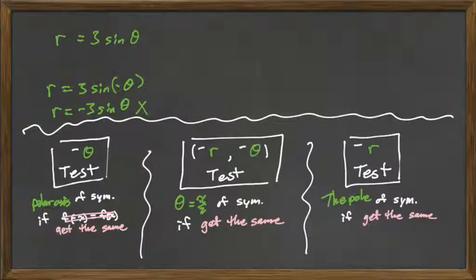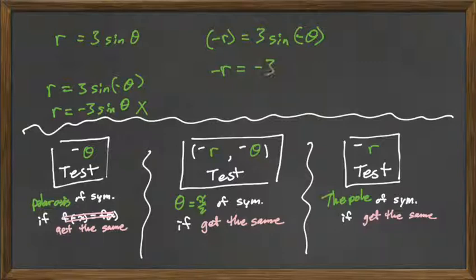What about the negative r negative theta test? Let's see. If I plug a negative r in there and I plug a negative theta in, what do I end up with? Okay, so that would be a negative r equals negative 3 sine theta. Hey, do we have, isn't that the same? Can we cancel out the negatives? Is that the same as what we started with? Yes.